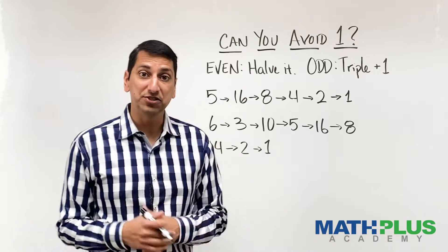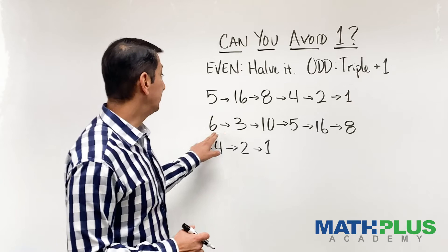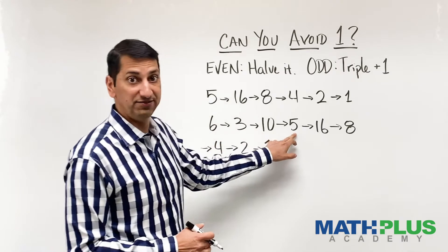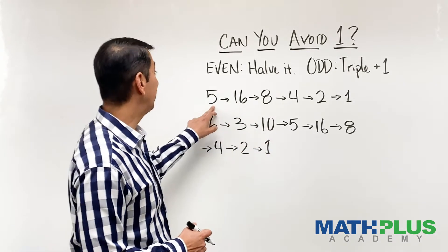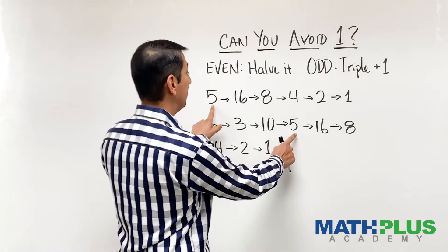Also, if you look at this, you might notice a few things. One thing you might notice is I went six, three, ten, five. Now, five is a number that I did already. And then it, of course, because it has to, does the same thing.